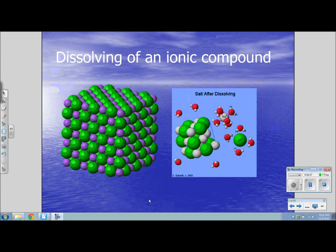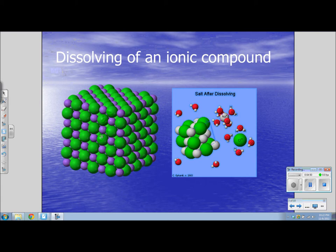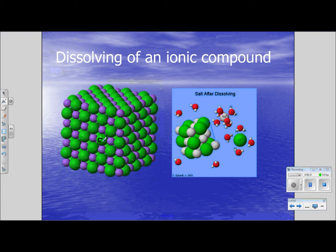Before we plunge into writing these double displacement reactions, we have to remember that ionic compounds are crystals. Sodium chloride looks something like this — notice that they are crystals. This is the Cl ion and these are the Na ions. Notice that the Cl ions are touching the Na ions, and no Na ion is touching another Na ion. They cancel each other out because it's a one-to-one ratio.